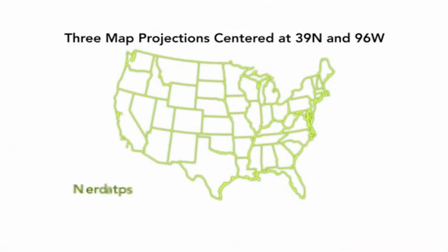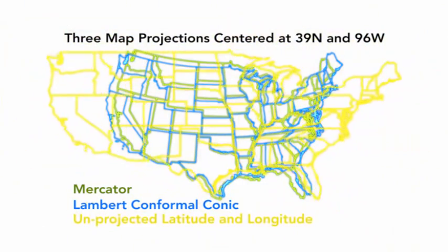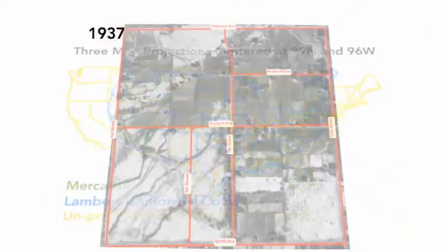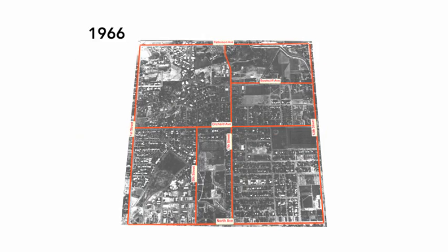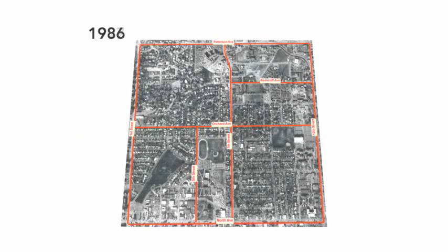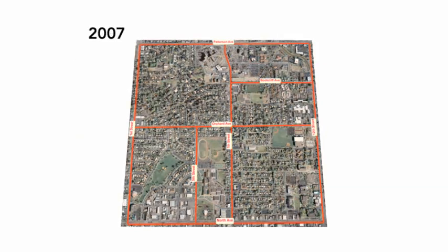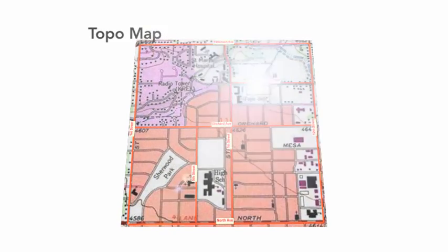The GIS user must decide which distortions are less important than others and then choose the appropriate map projection. GIS software such as ArcGIS can take the data and metadata and overlay each data set in the desired projection, enabling the user to be productive as quickly as possible.